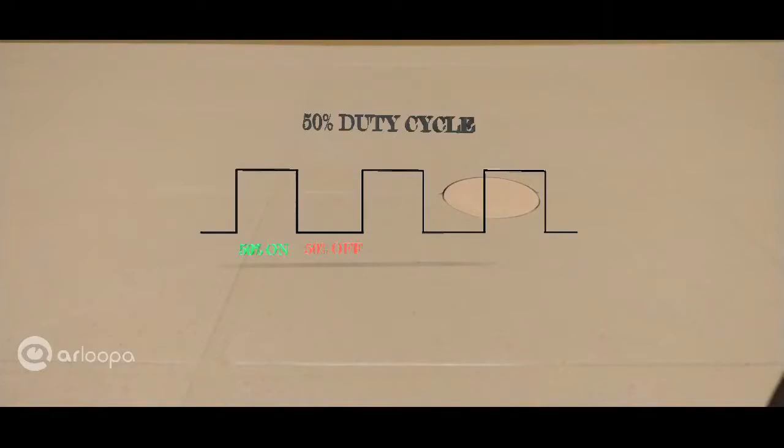All right, this is 50% duty cycle, so the signal is on for 50% of the time and off for the rest of the time. In this case, given the time period is 2 seconds, the duty cycle is 50% of 2 seconds, meaning it's 1 second. So, the signal is in the active state for 1 second and in the inactive state for another 1 second. And, this is how it will sound like.